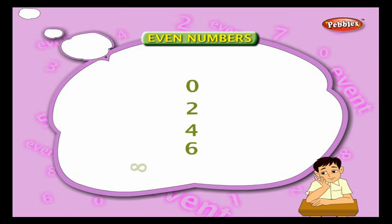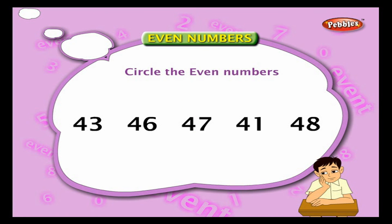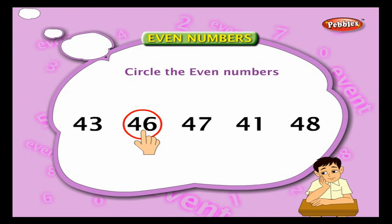Let us now circle the even numbers in the given five numbers. 43 ends with three, so it is not an even number. 46 ends with six, so it is an even number — circle it. 47 ends with seven, so it is not an even number.